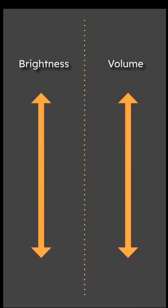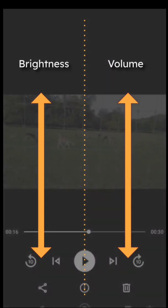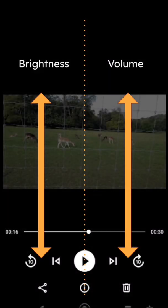So going up to number one: to adjust video playback you need to split the screen in two, with brightness on the left hand side and volume on the right. Of course those are invisible when overlaid to a sample video, which I'm about to show you.